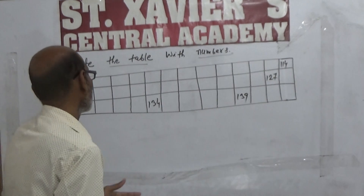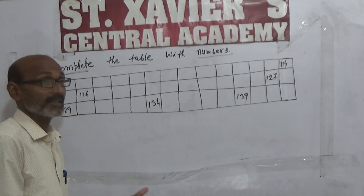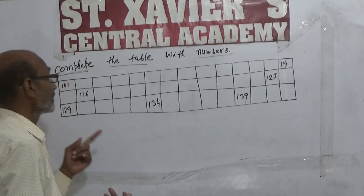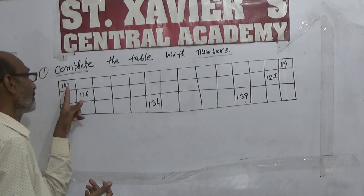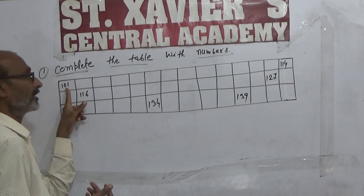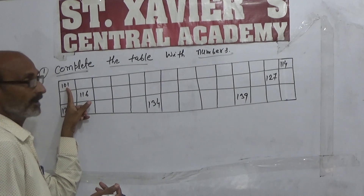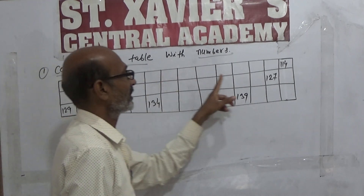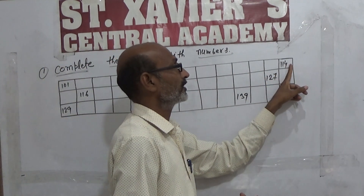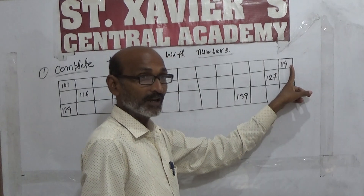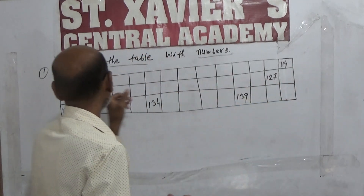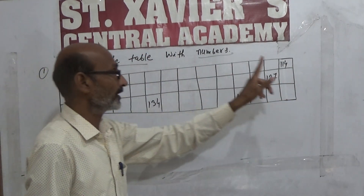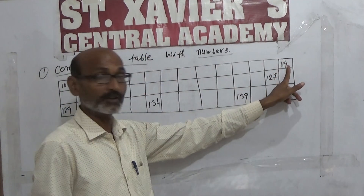Complete the table — देखेंगे कौन सा number डालें। यहाँ 101 है, फिर इसी लाइन में 114 है। 101 से 140 हुआ।